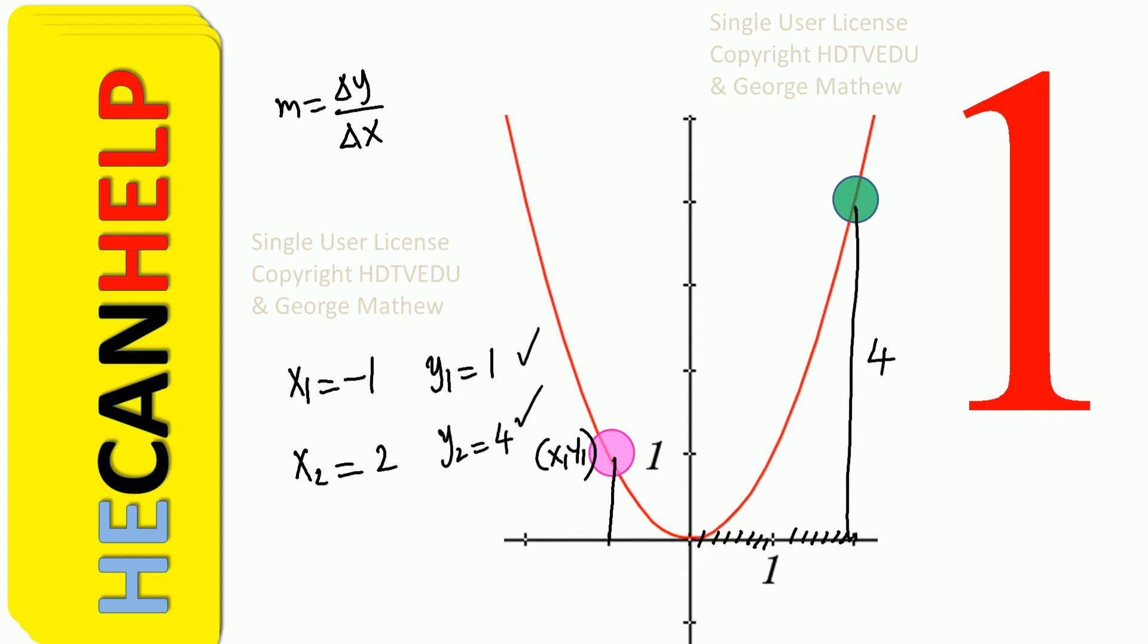We can really get change in y and change in x. What is change in x? Change in x is x2 minus x1. So it is 2 minus negative 1, and so it is 3.